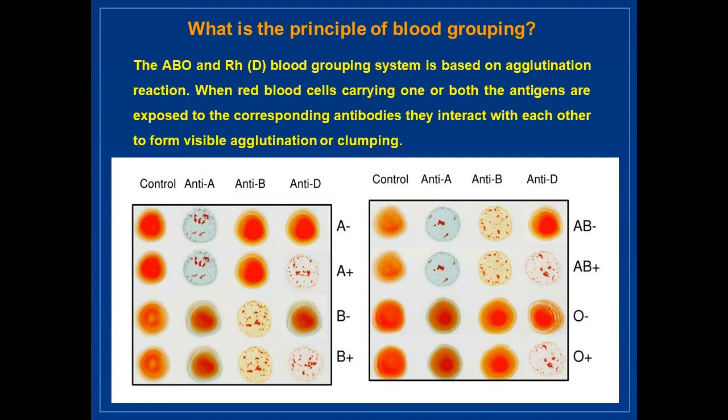In the next group, both anti-A and anti-D reacted, so it is A positive. Similarly for B blood group. In case of AB positive, agglutination occurred with all the antisera showing the presence of all the antigens. Whereas in O negative, there is no agglutination, showing no antigen. You can use this picture as a key to identify blood group.